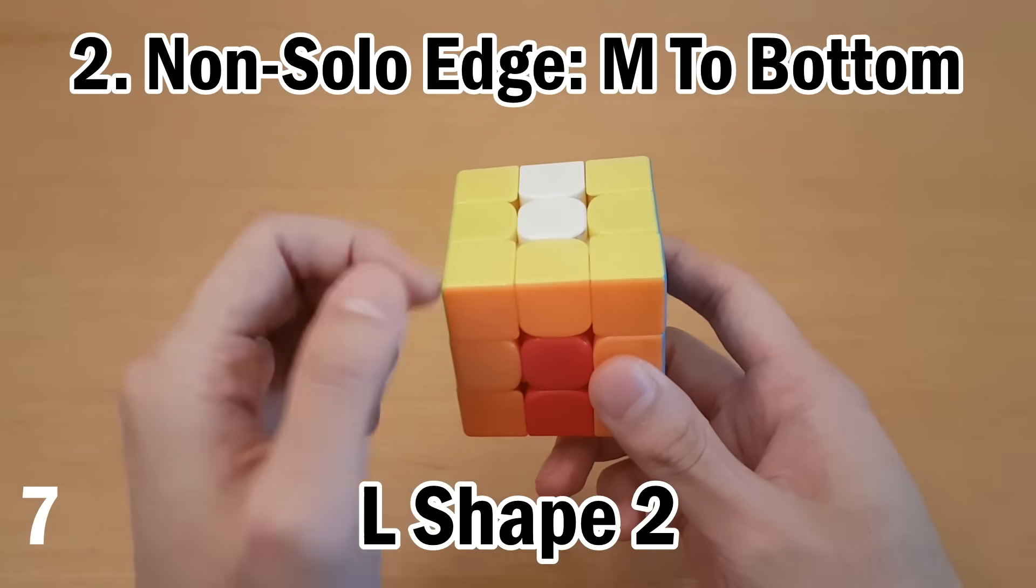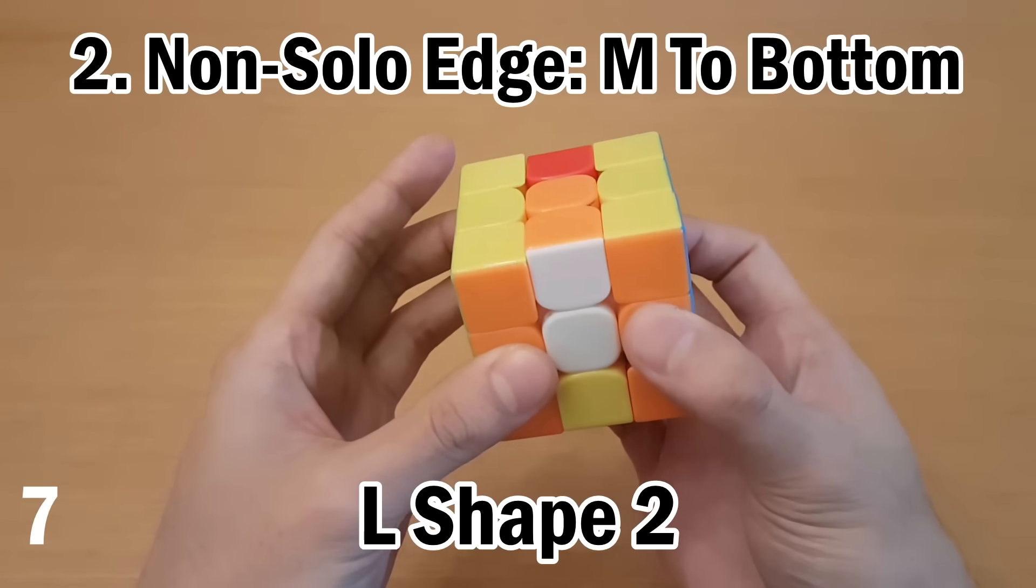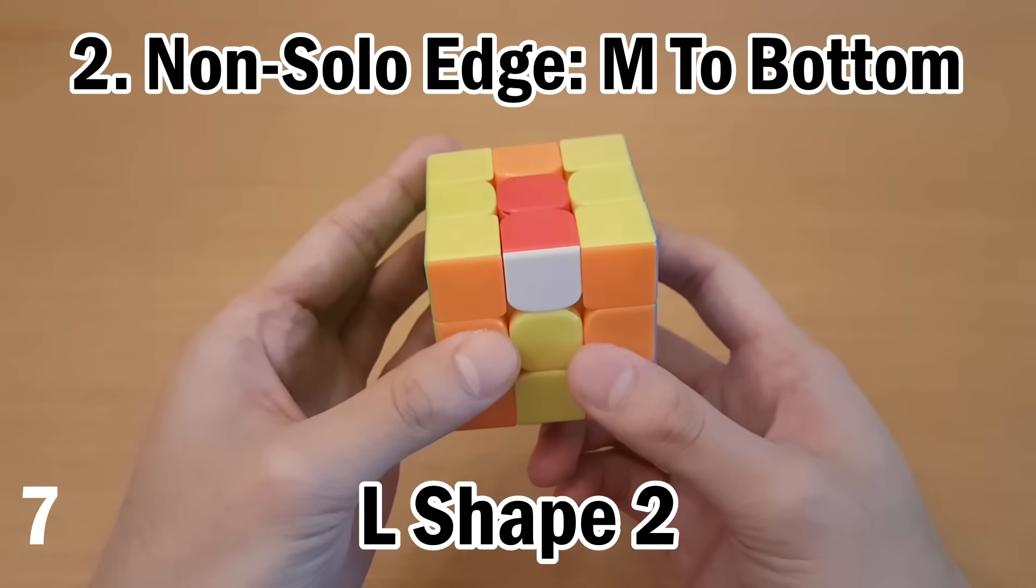Next, since this is not a solo edge, our first move, we'll move it to the bottom instead. So for non-solo edges, make sure you don't move it through the top like this. You move it to the bottom. And then of course, U2.